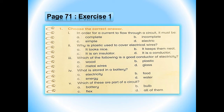Number 2 is: why is plastic used to cover electrical wires? Options are A. It looks nice, B. It keeps them neat, C. It is an insulator, D. It is a conductor. The correct option is C: it is an insulator. Number 3 is: which of the following is a good conductor of electricity? A. Wood, B. Plastic, C. Metal wires, D. Glass. The correct option is C: metal wires.